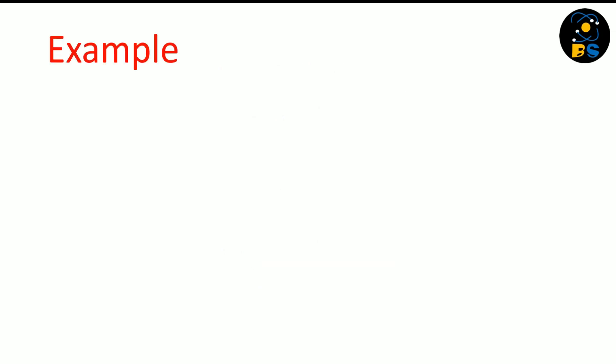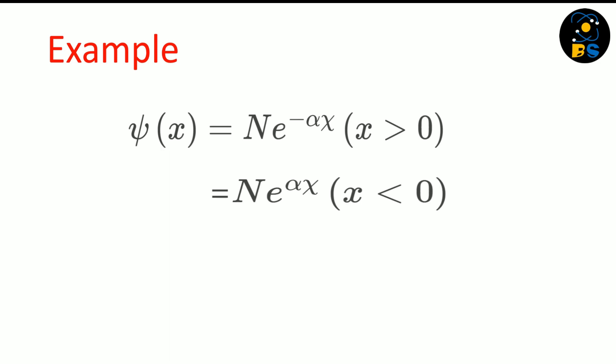Now let's try to understand this with an example. Our wave function is: for x greater than zero, it is N times e raised to the power minus alpha x; and for x less than or equal to zero, it is N times e raised to the power plus alpha x. Carefully note that for x greater than zero it is minus alpha, and for x less than or equal to zero it is plus alpha. To normalize this wave function, we use the normalization condition.